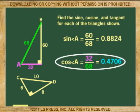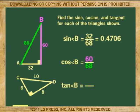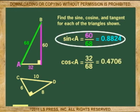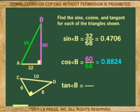And of course, the cosine of angle B is 60 over 68, which is the sine of angle A, or 0.8824.